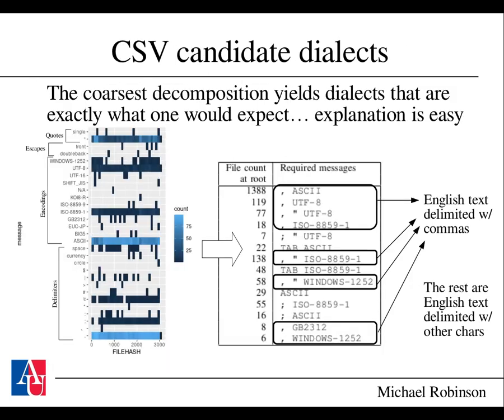Applying that decomposition to the CSV data, the classes we find list only the required messages at the root. The top classes are English text delimited with commas of various flavors — with or without quotes. ASCII, UTF-8, ISO 8859, and Windows 1252 are all effectively US English text. Interestingly, this data set was sourced from Great Britain. The remaining classes are English text delimited with other characters — very easy to explain.